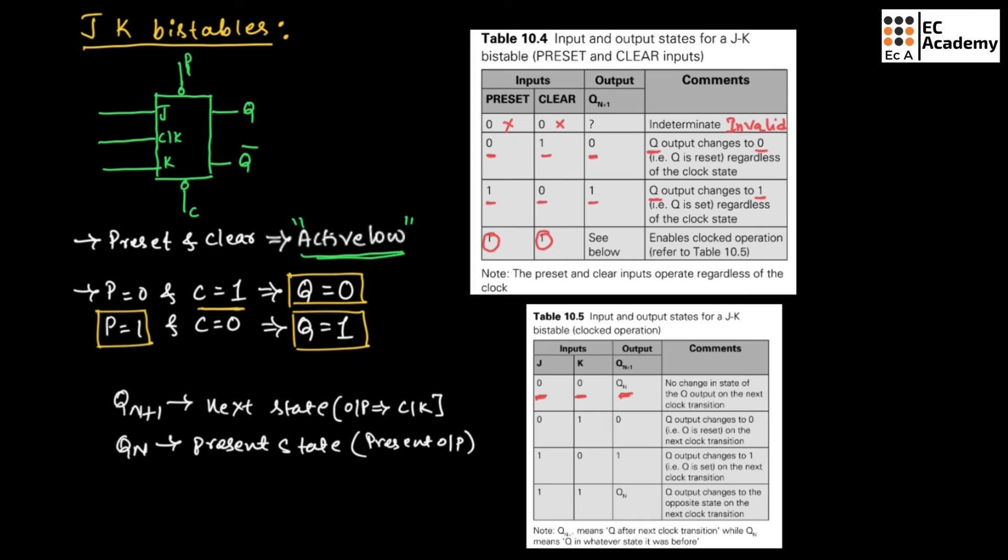That is why it is also known as memory state. When we make J as 0 and K as 0, this state is known as memory state.